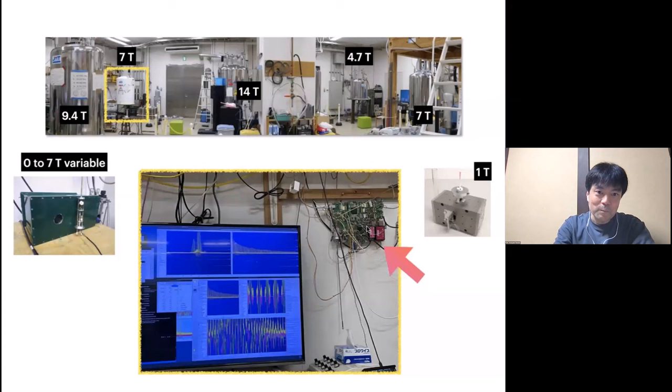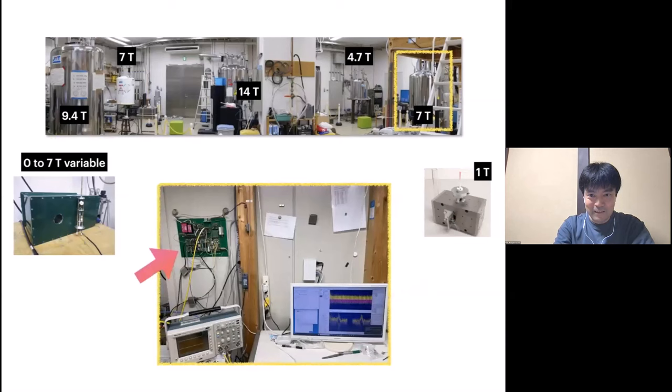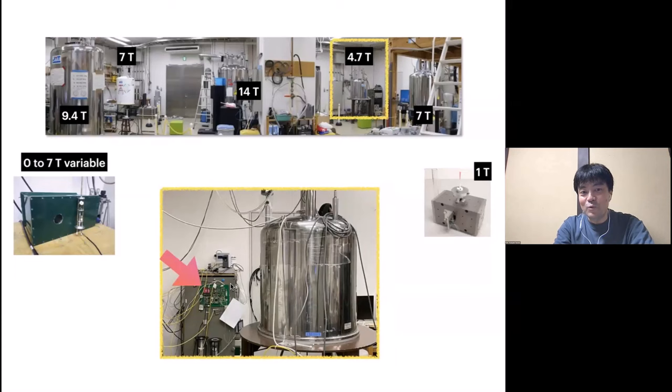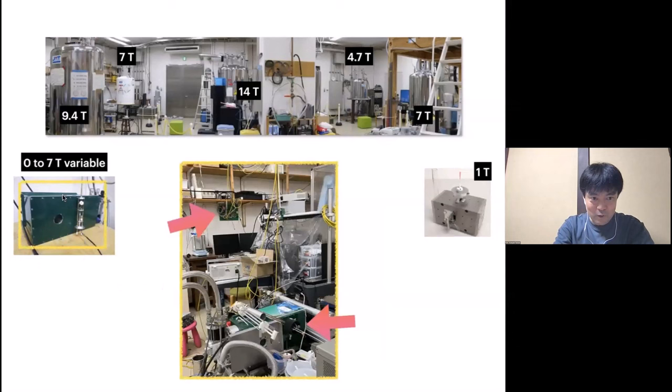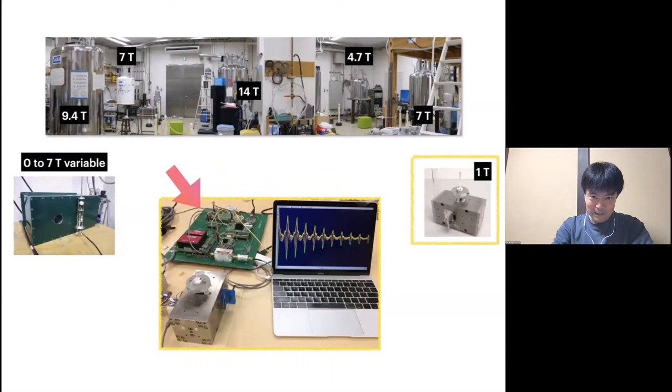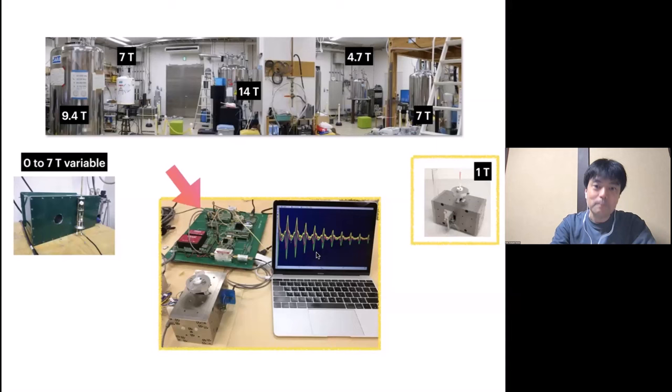This is the 7 Tesla NMR system, and another 7 Tesla — quite similar. And this is the 4.7 Tesla. We also have a somewhat special cryogen-free field-variable magnet dedicated for field-swept or field-variable experiments, and for this magnet we have another spectrometer hanging on the wall. Finally, we happen to have a permanent 1 Tesla magnet, mainly used for NMR toy demonstrations.